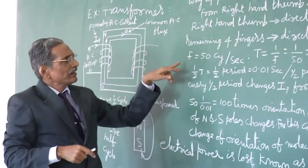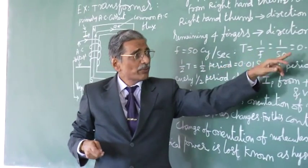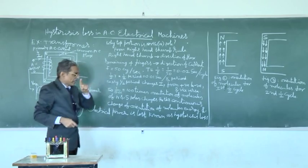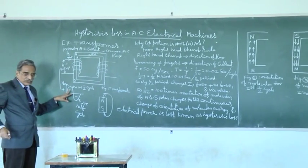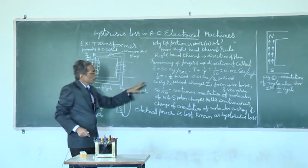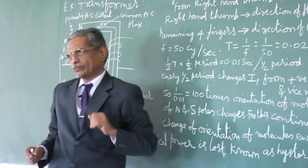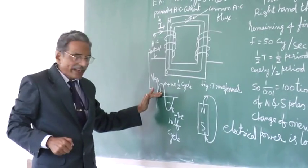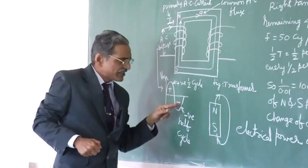So, let us say 50 cycles per second frequency. Time period is 0.02 seconds per whole cycle. Cycle consists of two half cycles: positive half cycle and negative half cycle. So, every half period changes polarity from positive to negative means this is positive. Again, it is changing to negative. For every half cycle it changes.